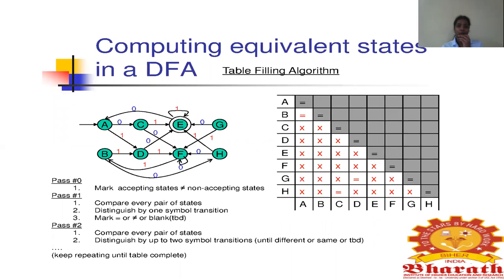Now we go for an algorithm where you will be able to determine whether two DFS are equal, or you can try to minimize the number of states in the DFS. In this algorithm we call it the table filling algorithm, where we have a table with the states in both horizontal and vertical directions.